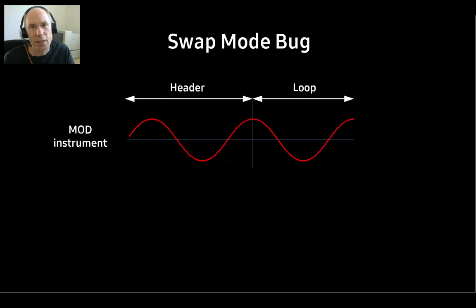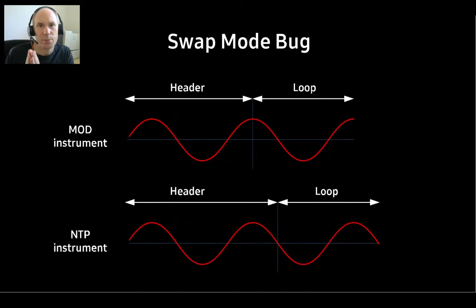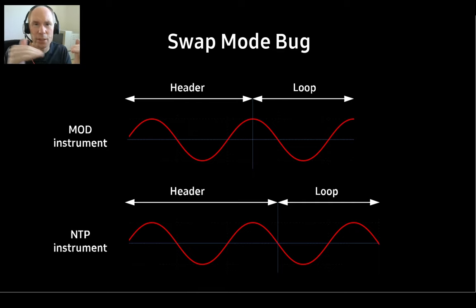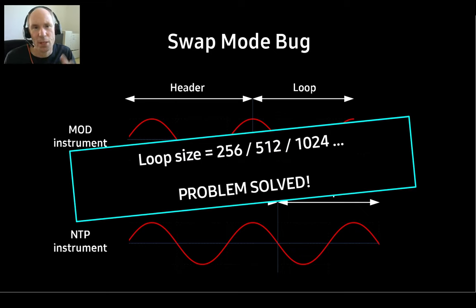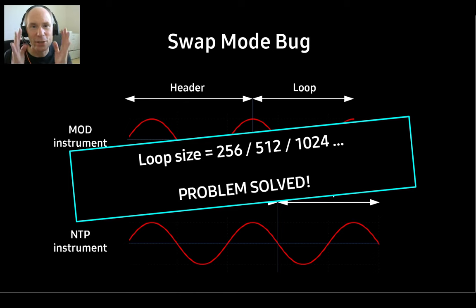The click sound can be mitigated by making sure the swap happens near a silence crossing in the wave. The NTP converter will try to make the header longer and rotate the loop so that the end of the loop is near a silence crossing. Also, if loops are very short, they are repeated so the click happens less often. But really, the only way to prevent this and get the best sound quality is to make sure your loops have an ideal size. If you forget everything from this talk, this is the one thing to remember: check your loop size.